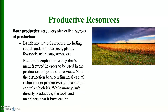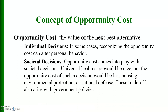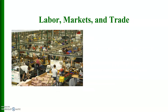Productive resources include four categories: land, capital, labor, and entrepreneurship. The concept of opportunity cost is the value of the next best alternative. In individual decisions, recognizing opportunity cost can alter personal behavior. In societal decisions, opportunity cost also comes into play — for example, universal healthcare would be nice, but the opportunity cost would be less housing, environmental protection, and national defense. These trade-offs also arise with government policies.